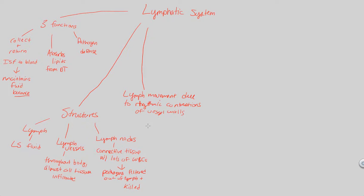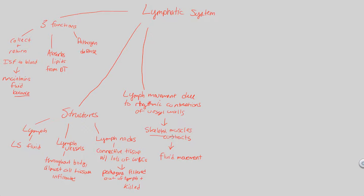How do vessel walls rhythmically contract to push lymph throughout the body? This occurs whenever skeletal muscles contract. Skeletal muscles contain different blood vessels and connections, so whenever skeletal muscles are contracting, they cause lymph to push through as well. Skeletal muscle movement and lymph movement are simultaneous. Therefore, it's important to recognize that lymph cannot move throughout the body unless the body is actively moving and skeletal muscles are contracting.